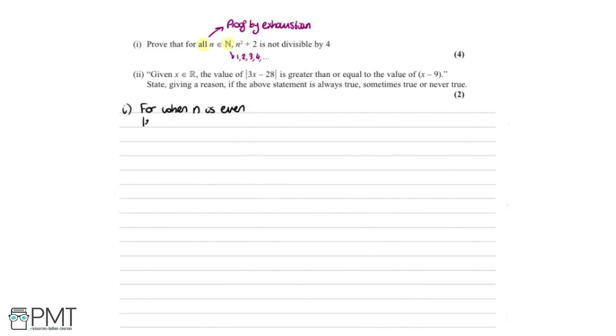When n is even, we can write: let n = 2k, where k is any constant, because multiplying something by 2 always gives an even number. So we're going to see what happens when we plug in an even number. We write n squared plus 2 equals, letting n be 2k, so that's (2k)² + 2.